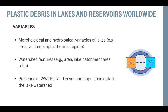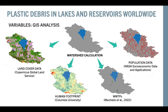Finally, we looked at the variables related to plastic concentration and watershed characteristics. We examined morphological and hydrological variables of the lakes — area, volume, depth, thermal regime — as well as watershed features and socioeconomic data, such as the presence of wastewater treatment and land use and population data that we thought might affect plastic numbers. To do so, we performed GIS analyses and used globally available databases.